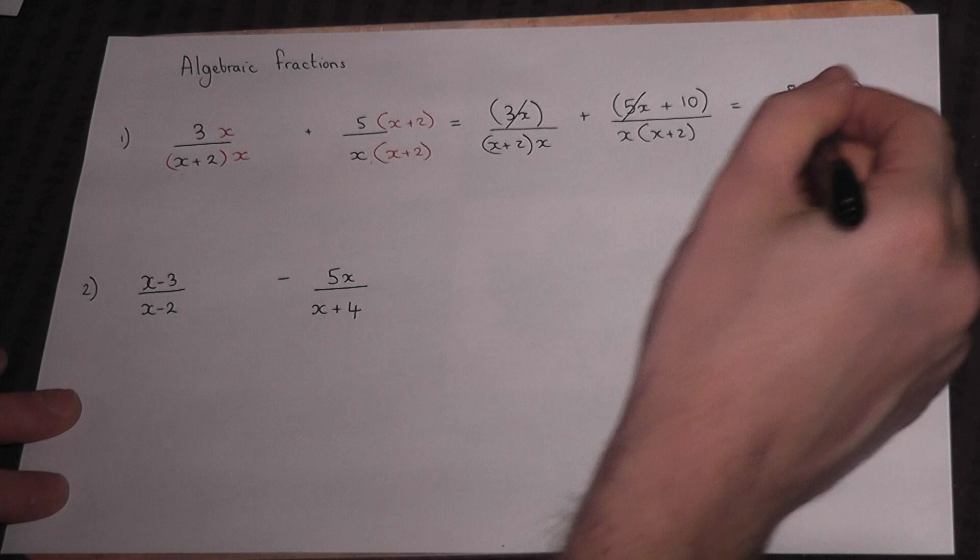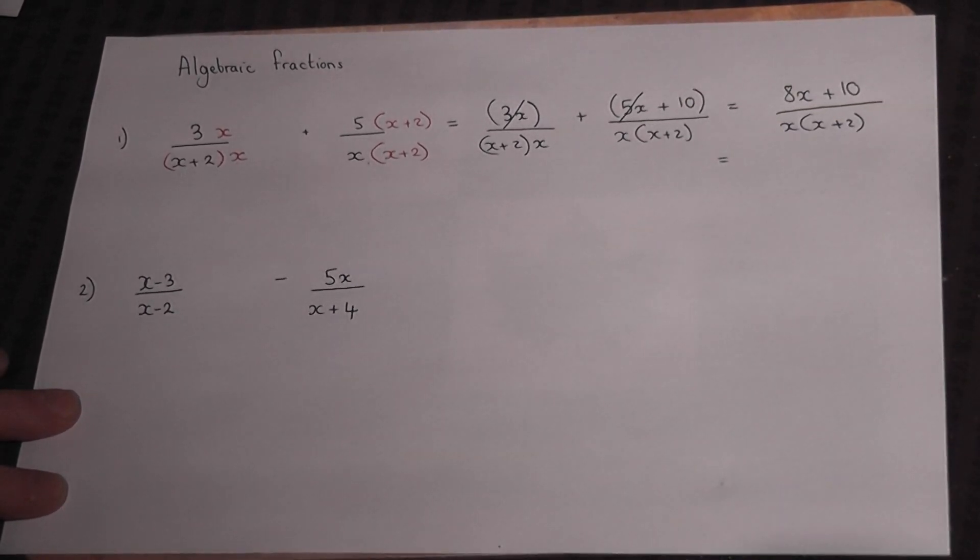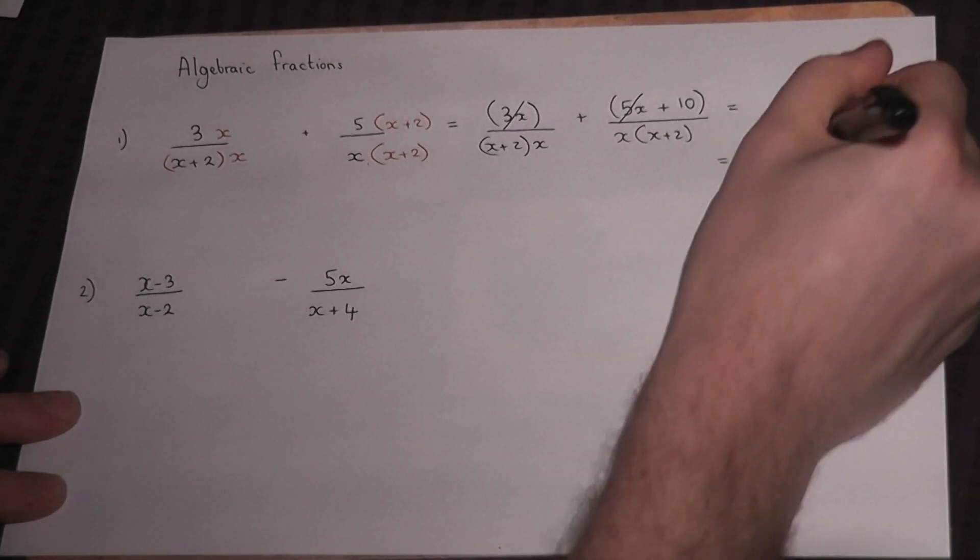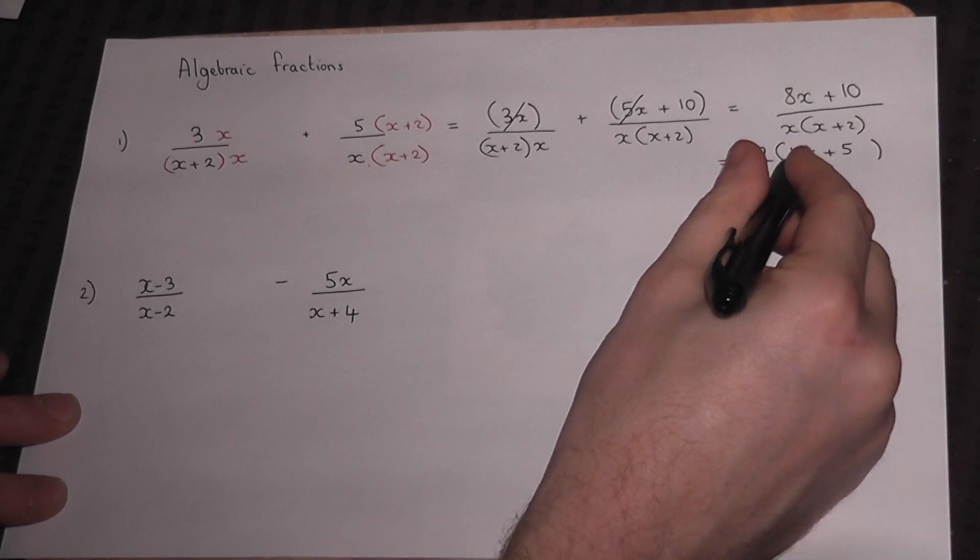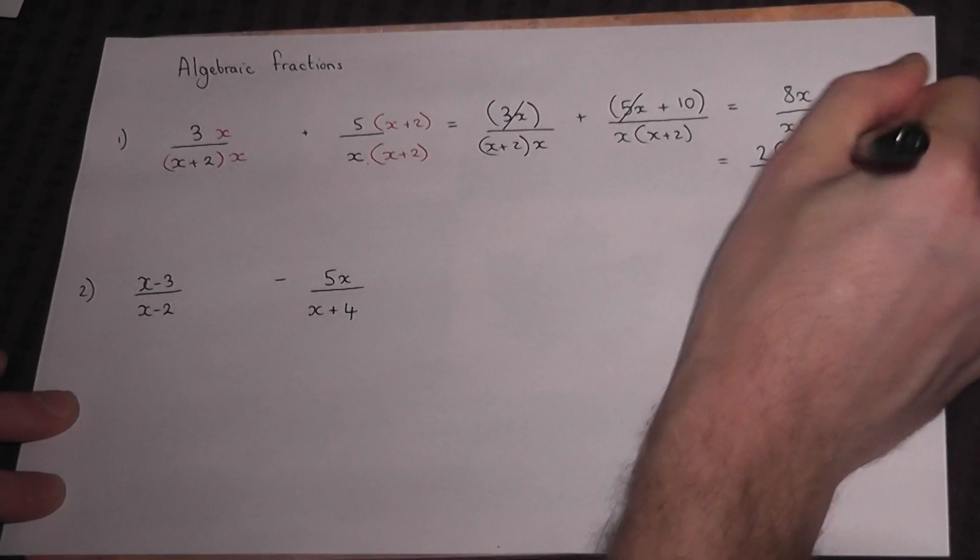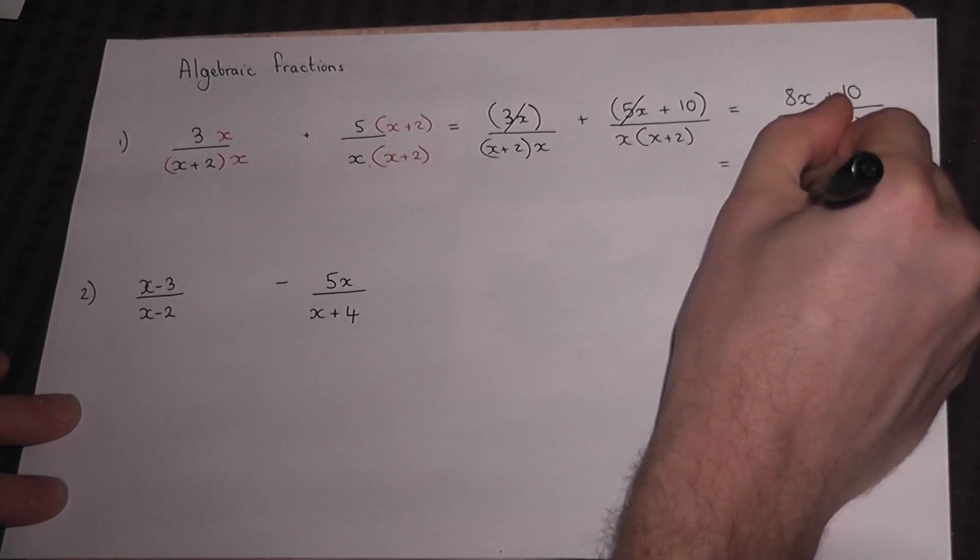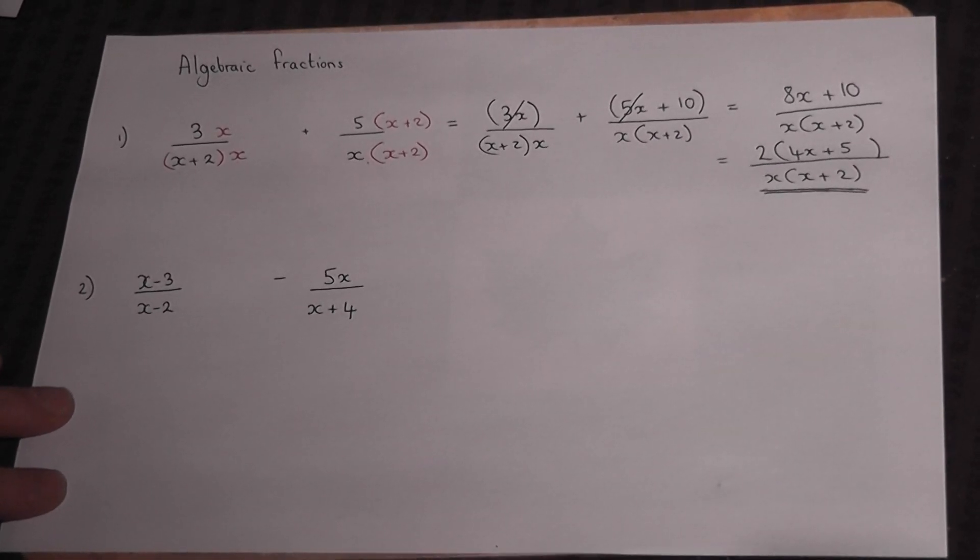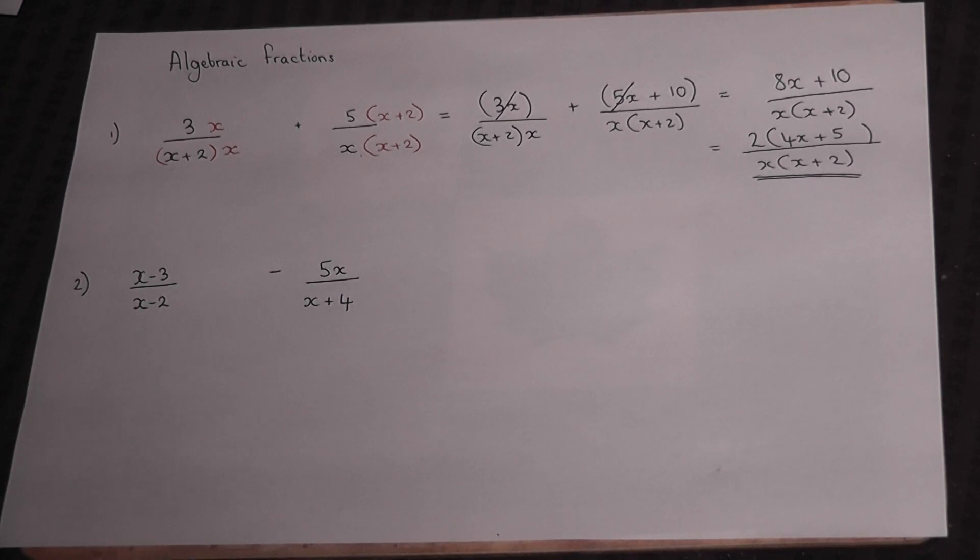However, there's one final step which can help make the answer simpler: factorize the top of the fraction. Those two terms share a factor of 2. I can write 2(4x+5) over x(x+2). That is your final answer. Sometimes factors can cancel out. The second example uses the same rules, so rule number one: place brackets where necessary.